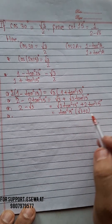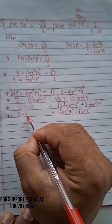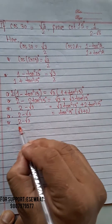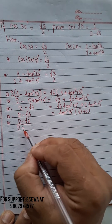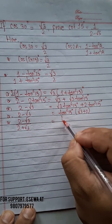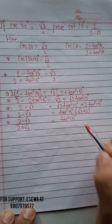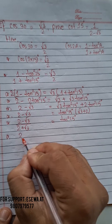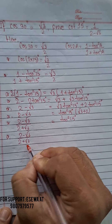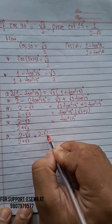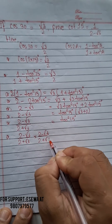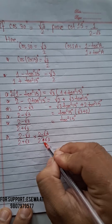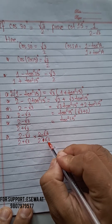So tan²15° = (2 - √3) / (2 + √3). Now I'm going to rationalize this — multiply both numerator and denominator by (2 - √3).